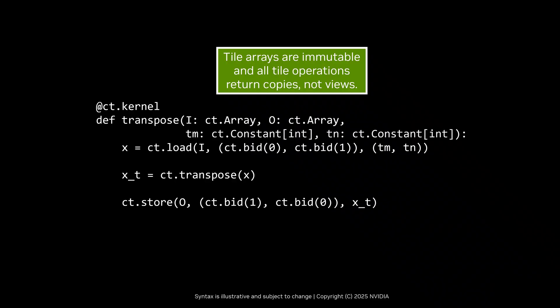Tile arrays have value semantics, which simplifies compiler analysis by eliminating problems such as aliasing. Tile arrays are immutable, and all tile operations return copies, not views. Some NumPy array operations, such as indexing, reshaping, and transposing, typically return views, not copies, when possible. The tile equivalents will always return copies, not views.